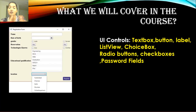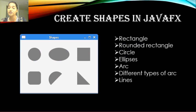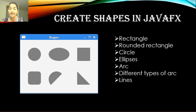Once we're familiar with the basic controls and layout panes available in JavaFX, we're going to work on different kinds of shapes. JavaFX gives you two-dimensional as well as three-dimensional shapes. You can build rectangles, rounded rectangles, circles, ellipses, arcs, lines, etc. We'll go over each of these shapes, create a canvas on which we'll add them, and see the important methods and properties of each shape.